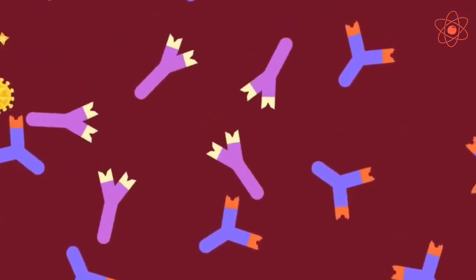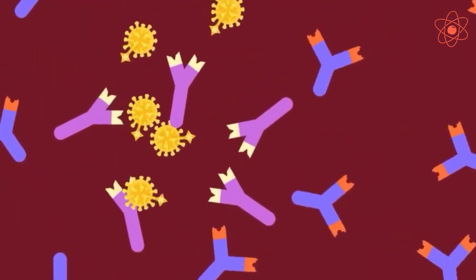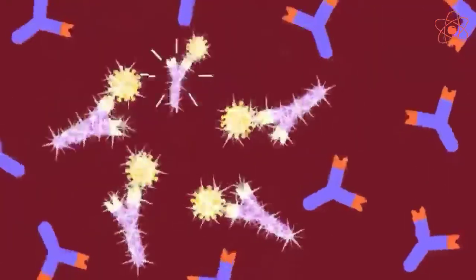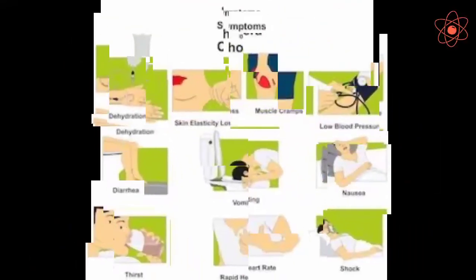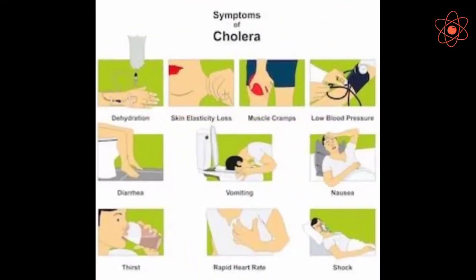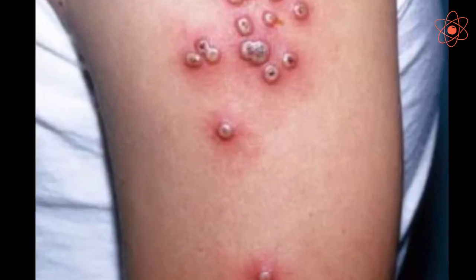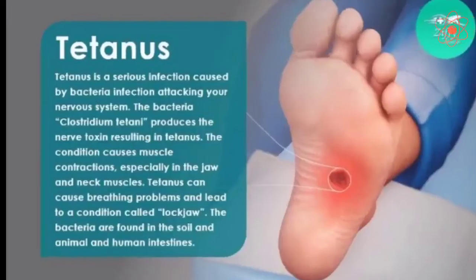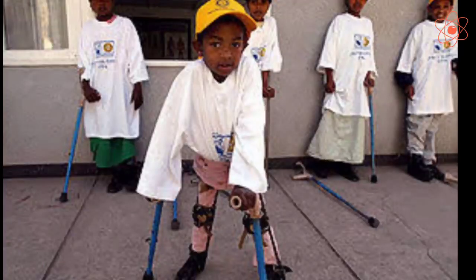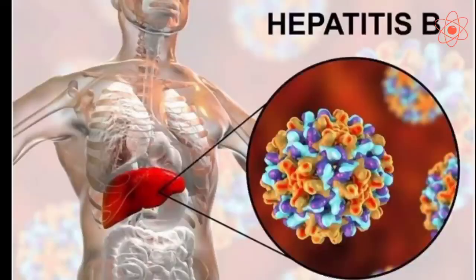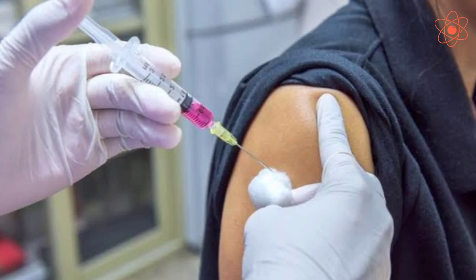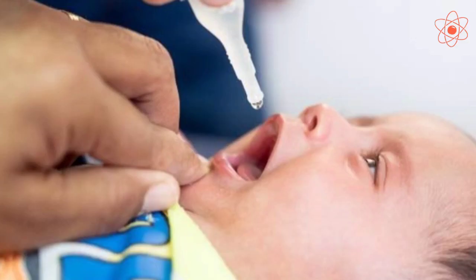In this way, a vaccine develops immunity from a disease. Several diseases including cholera, tuberculosis, smallpox, tetanus, polio, and hepatitis B can be prevented by vaccination. A vaccine can either be injected or given orally.